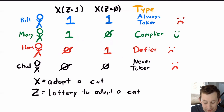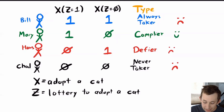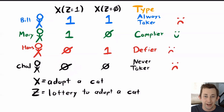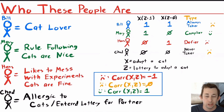Hans is a defier for the opposite reason that Mary is a complier. If Hans's name gets pulled out of the hat, he does not adopt the cat (X=0). If his name is not pulled, he finds a way to adopt the cat anyway (X=1 given Z=0). Chad is a never taker: even if his name gets pulled out of the hat, he will not adopt the cat.